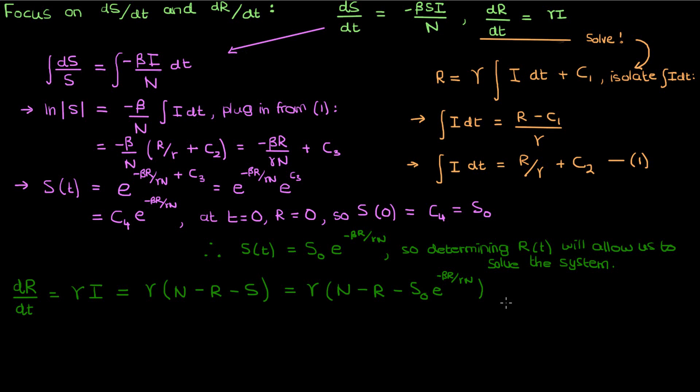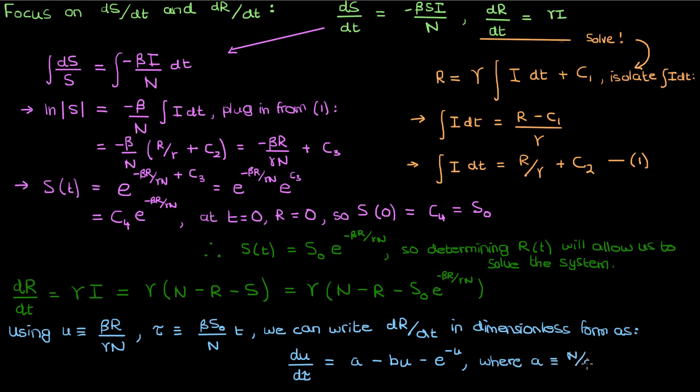I've got videos on non-dimensionalization already so I won't go through the full process, but I invite you to use these dimensionless variables u, which is the dimensionless version of R, the other dimensionless variable tau, which is the dimensionless time. I want you to use these variables to show that this differential equation for R can be simplified to du d tau equals a minus bu minus the exponential of negative u. Note that a and b here are dimensionless parameters defined by the following expressions.